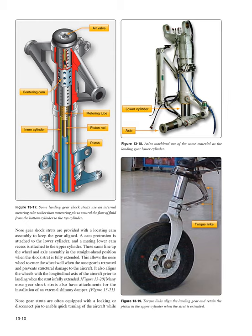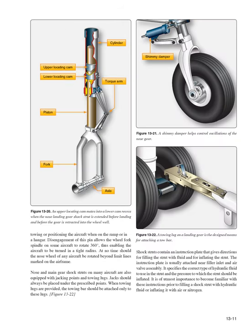Nose gear shock struts are provided with a locating cam assembly to keep the gear aligned. A cam protrusion is attached to the lower cylinder, and a mating lower cam recess is attached to the upper cylinder. These cams line up the wheel and axle assembly in the straight-ahead position when the shock strut is fully extended. This allows the nose wheel to enter the wheel well when retracted and prevents structural damage. It also aligns the wheels with the longitudinal axis of the aircraft prior to landing. Many nose gear shock struts also have attachments for the installation of an external shimmy damper.